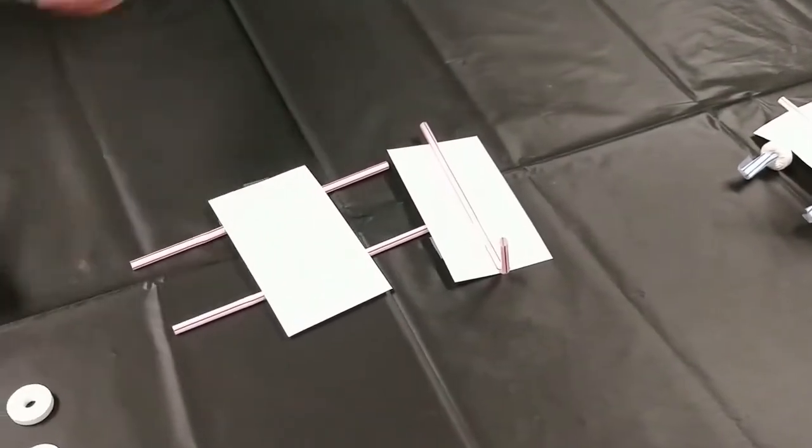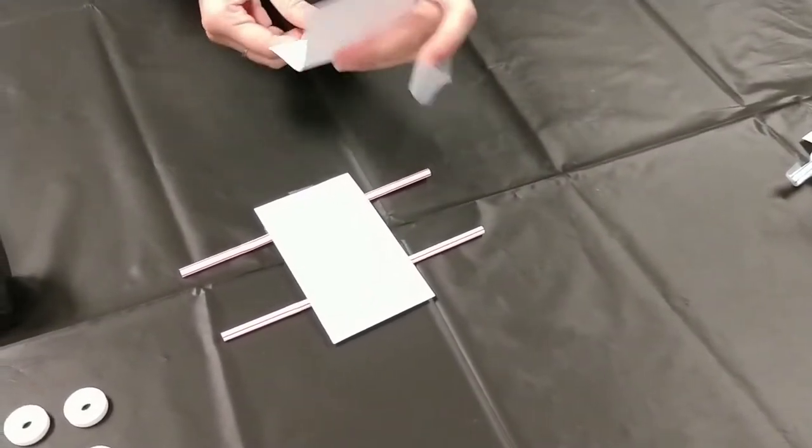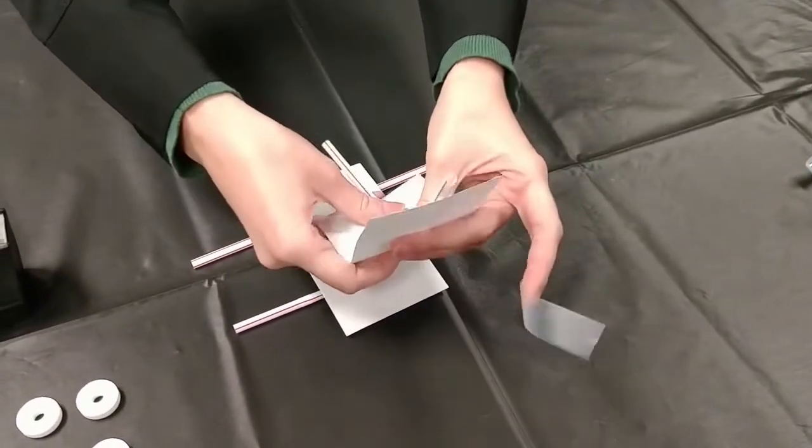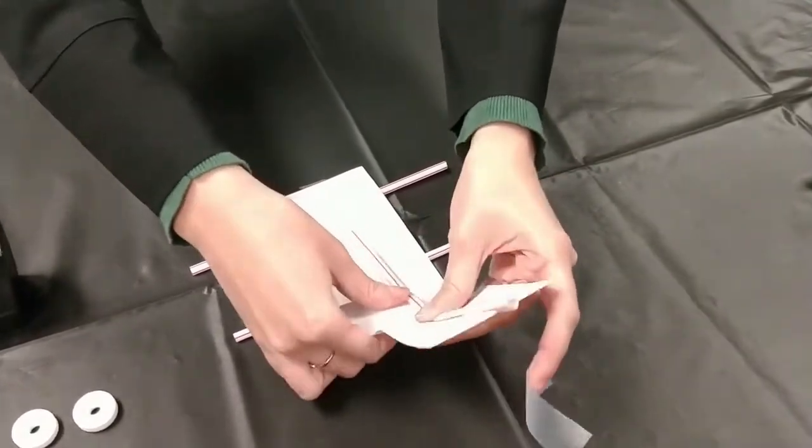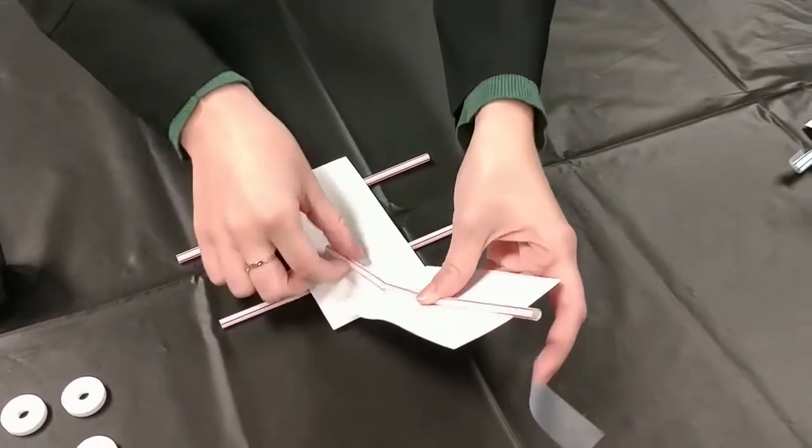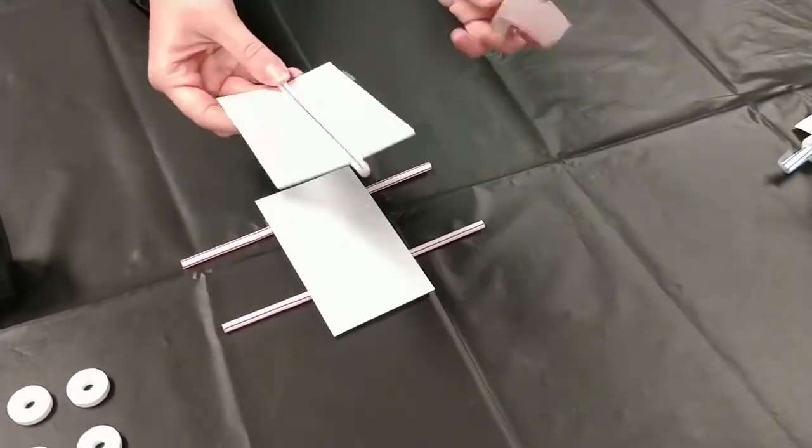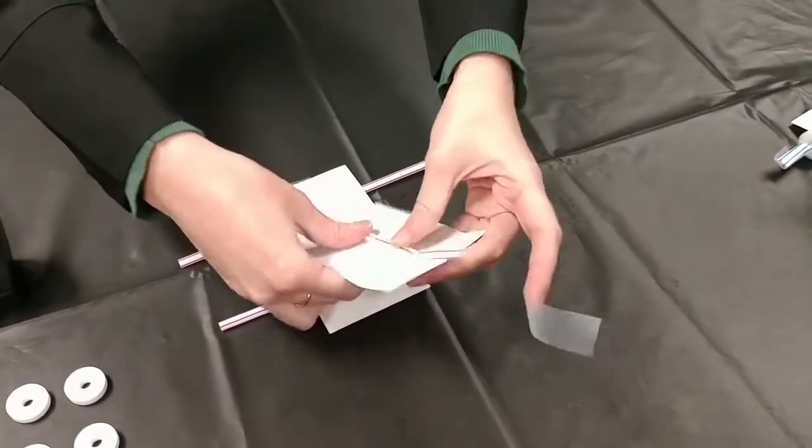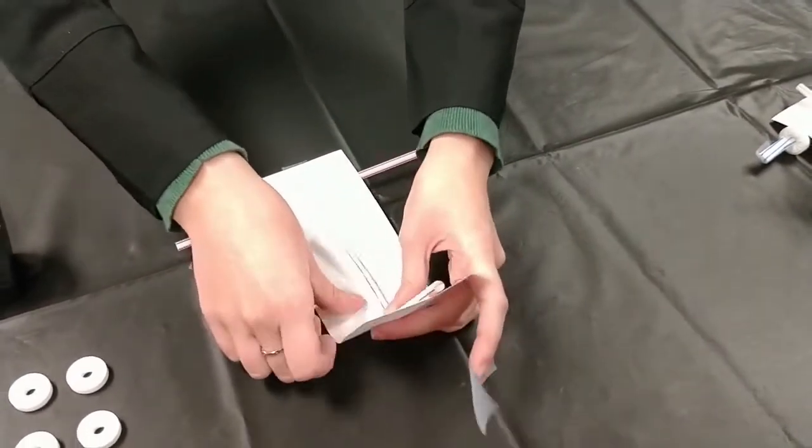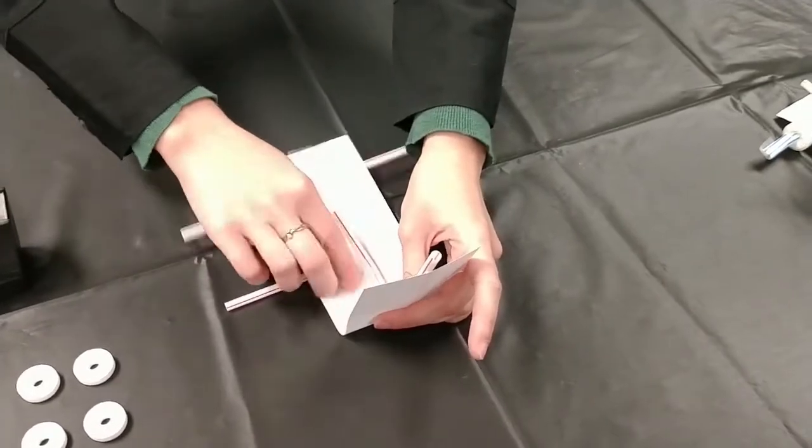You're going to take some more tape. It works a lot easier if you tape this part down on this side, but I went a little rogue. So I'm just going to have to bend my straw a little bit, but that's okay because you don't need the straw part, you just need it to hold things up.